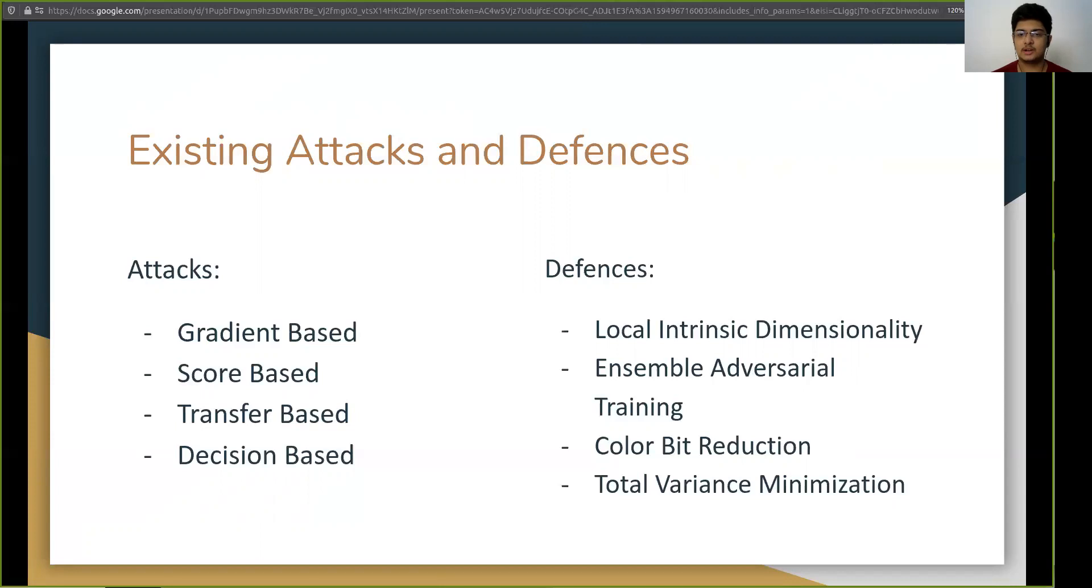Now, for the recent defenses, local intrinsic dimensionality or LID suggests that for an adversarial image, its dimensionality is more compared to the normal or noisy images in its neighborhood. Ensemble adversarial training keeps a lot of adversarial images in the training loop itself. Color bit reduction and total variance minimization are pre-processing techniques that are shown to properly resist certain attacks and our work is very similar to these two because in our work also we modify the input and output layers.